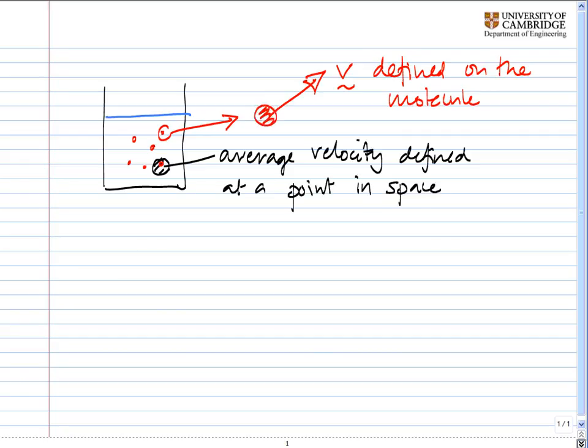So there's our fundamental difference. In this continuum model, things are defined at points in space, whereas in the molecular picture, things like velocity are defined on the molecules themselves.